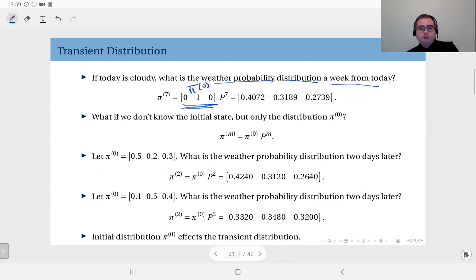But, the question is, what if you do not know the initial state? What if you do not know it is cloudy today? If you are in this situation, you would know, but there are a lot of scenarios where you might not know the initial distribution. In that case, the probability distribution in the initial state 0, which we call the initial distribution, is going to appear here. So, πₘ, the transient distribution after m transitions, is equal to the initial distribution times m-step transition probability matrix.